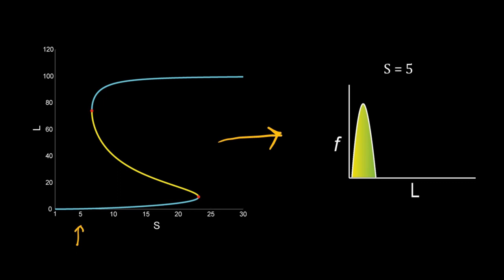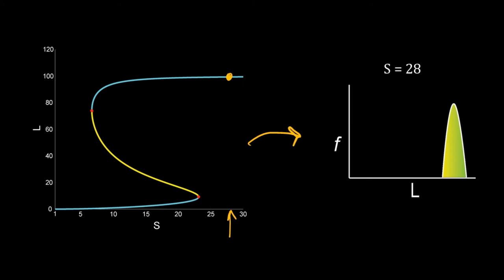So suppose this is the distribution of expression of L when S is equal to 5. This distribution is unimodal. For a very high dose of S, say S equal to 28, the system is monostable with very high expression of L. So we will again get a unimodal distribution in flow cytometry but with a high mean.